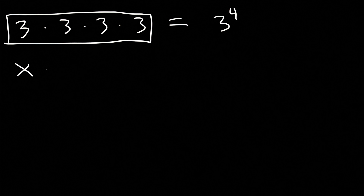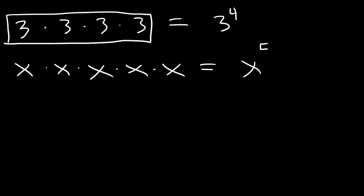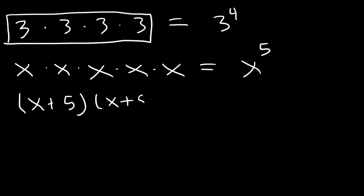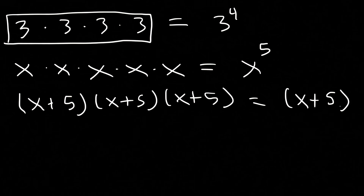For example, if we have 5 x variables multiplied together, instead of writing it in its expanded form, we can say this is simply x to the 5th power. Another example: if we have (x plus 5) times (x plus 5) times (x plus 5), three times, this is equivalent to (x plus 5) raised to the 3rd power.